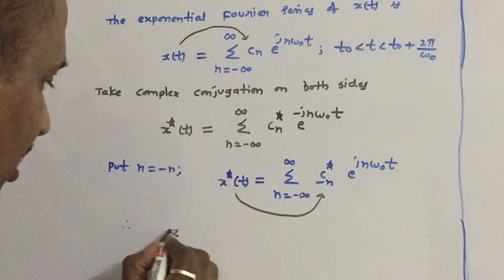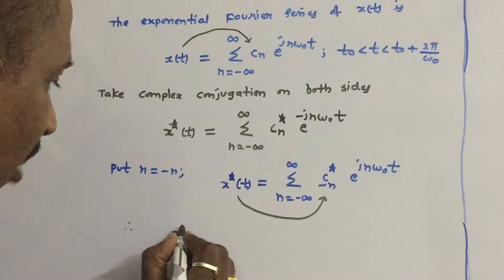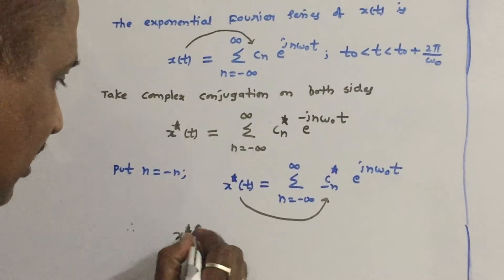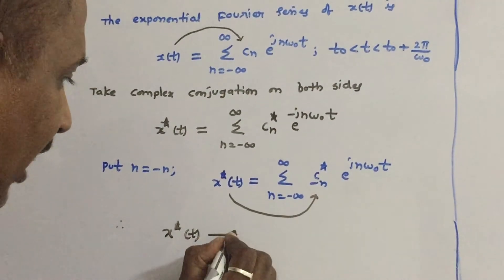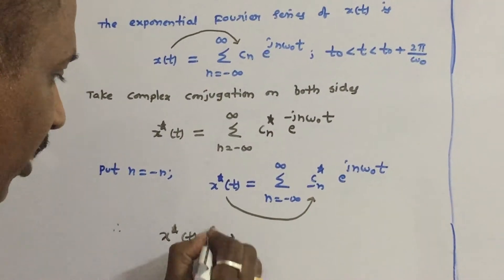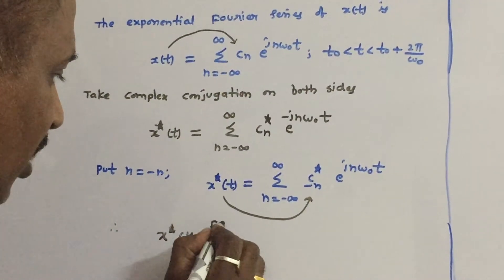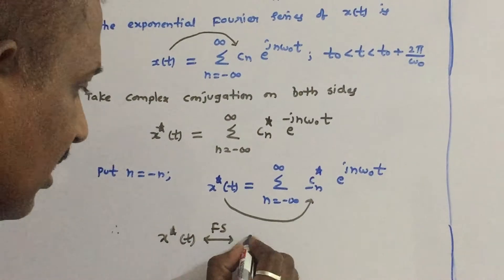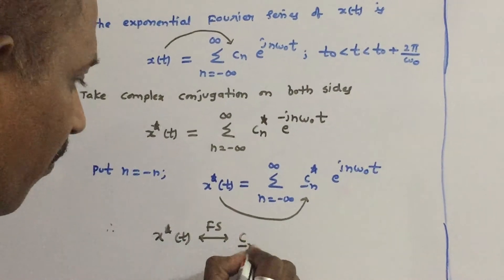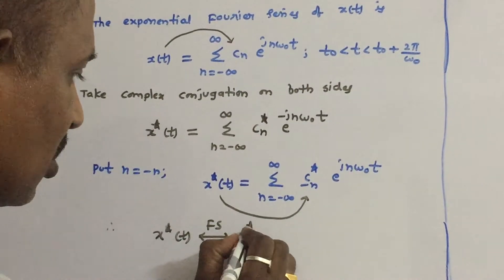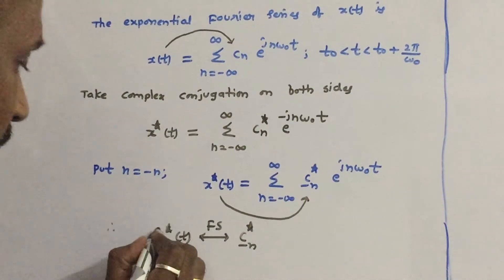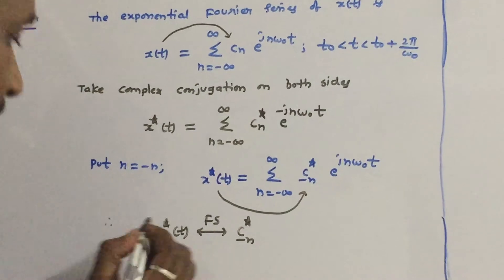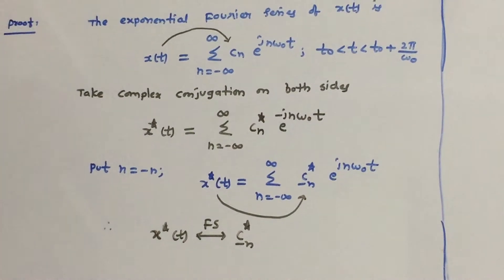We can clearly observe that if x of t's exponential Fourier series coefficients are cn, then x star of t — the complex conjugate of x of t — has exponential Fourier series coefficients equal to c minus n star. This completes the proof of the conjugation symmetry property.